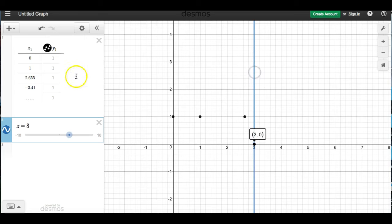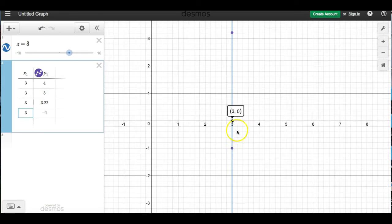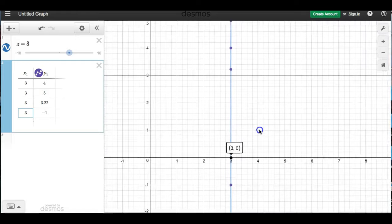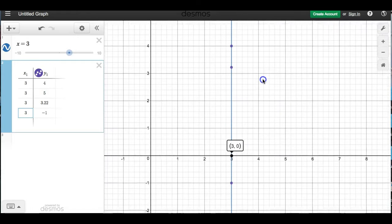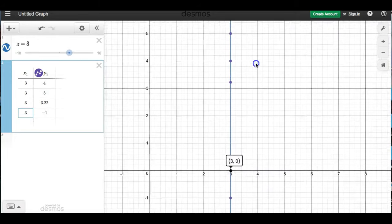Here's where x is 3. Again, I can throw in lots of points here. And y can be whatever it wants as long as x is always 3. It's going to fall on our line here. Right? These are all solutions. Wherever x is 3, it will be on this line. It doesn't matter what y is.